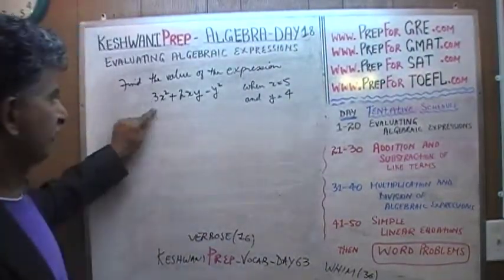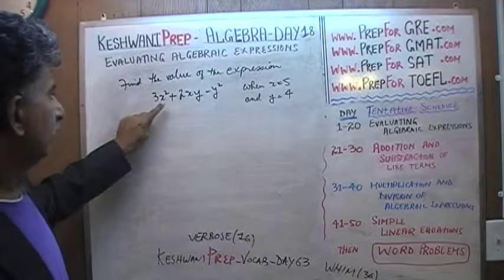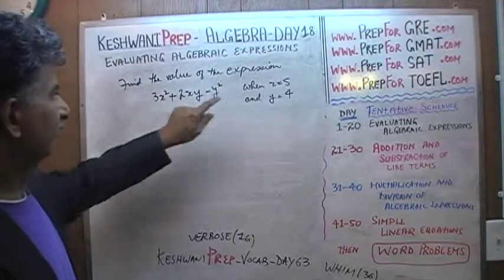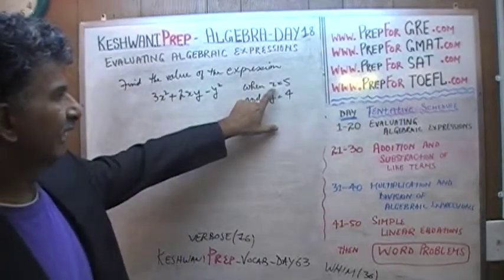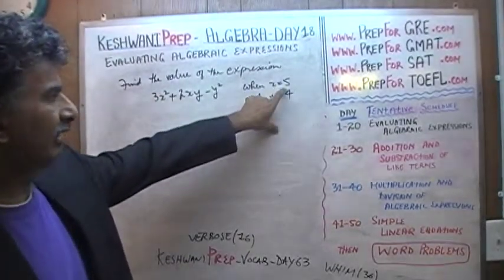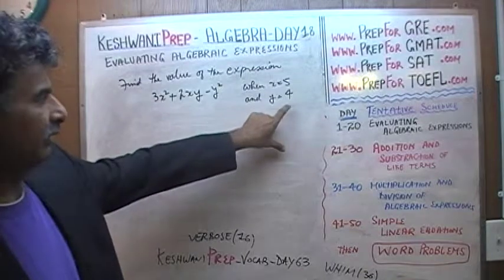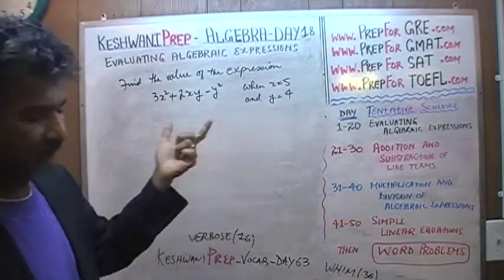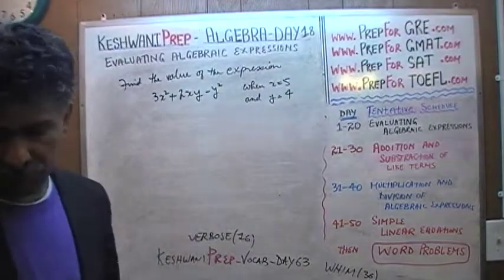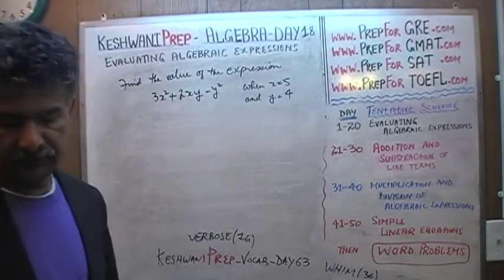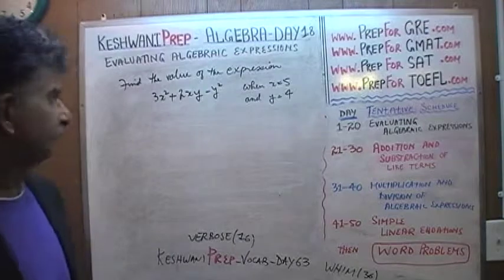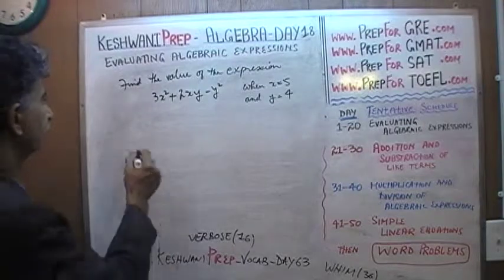All we have to do is go into this expression — wherever we see x, replace it with 5; wherever we see y, replace it with 4 — and simply tell them what the value of the expression is. So let's do it.